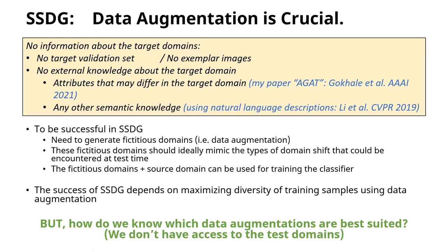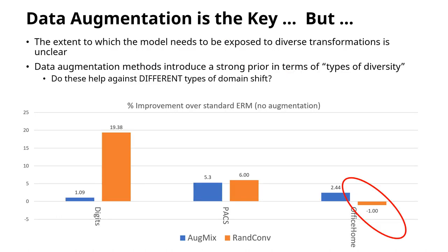The success of SSDG largely depends on maximizing the diversity of training samples, but which data augmentation techniques should we use? In SSDG, we are not allowed access to the target domains. When we compare previous data augmentation techniques like AugMix and RandConf on SSDG benchmarks, we see that the improvement over standard ERM is strongly impacted by the choice of augmentation technique. While RandConf gives a 19% boost on digits, it can actually degrade performance on Office Home.